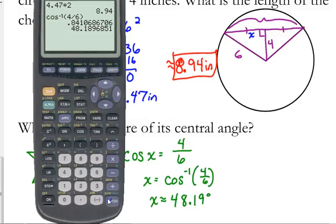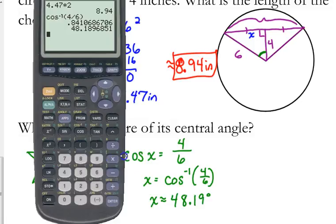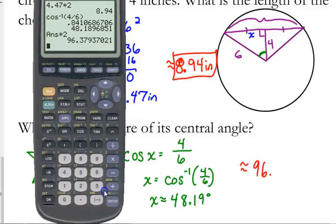Is that our final answer? If I'm asking that question, is it our final answer? Probably not. That was just this part right here. That was just half of it. So we're going to double it to get the entire central angle. Multiply it by 2, so our central angle is approximately 96.38 degrees.